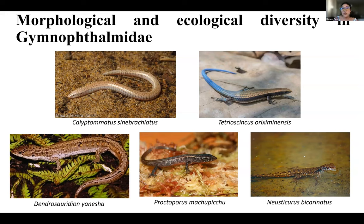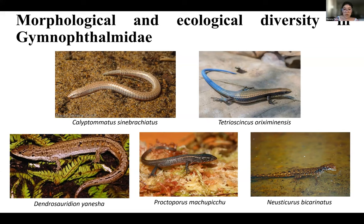This family shows great morphological and ecological diversity. Here we have five different species displaying different morphologies and ecological habits — for example, Calyptommatus niobatraqueus, which is a fossorial species, and on the other hand Neusticurus, which is a semi-aquatic species. In general the family has great morphological variation, and a herpetologist can find the same phenotypes in completely different clades that are not related at all, making Gymnophthalmidae a great model to study convergent evolution.